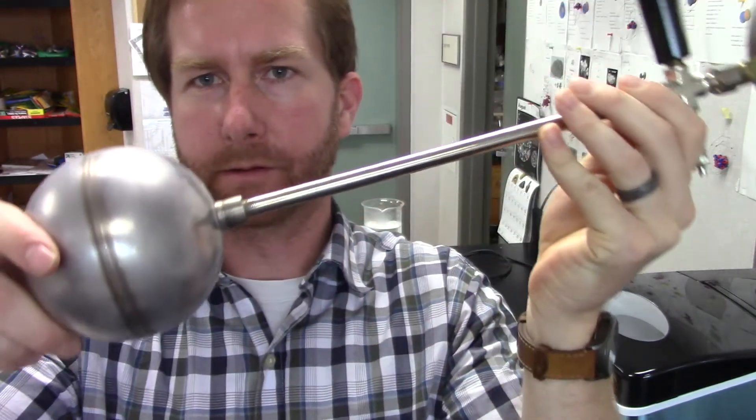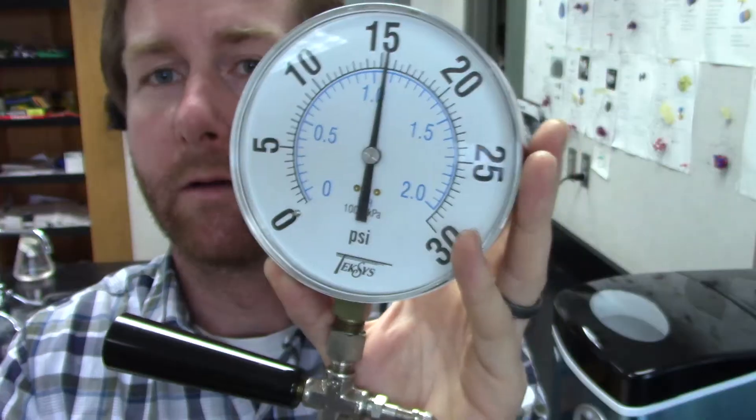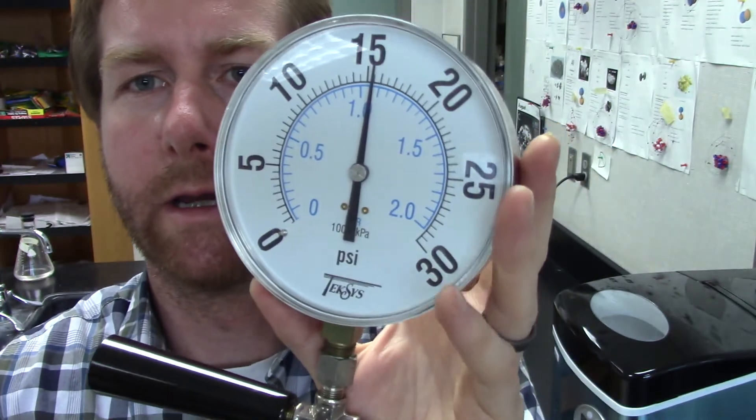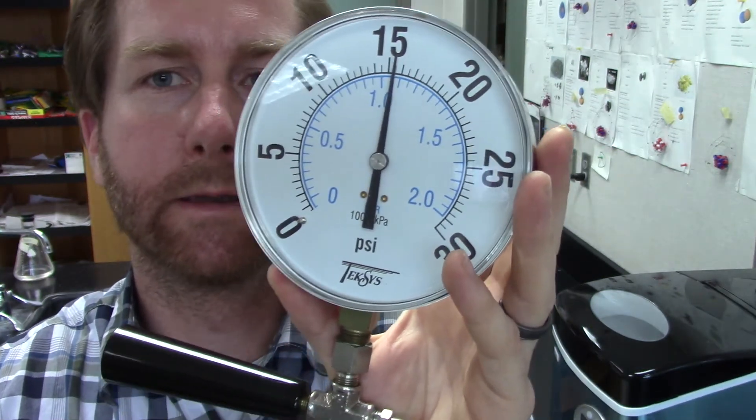So now we're going to take this pressure gauge with this bulb on the bottom, and we're going to put this into ice water, boiling water, and dry ice. So we'll be able to record the pressure and the temperature.